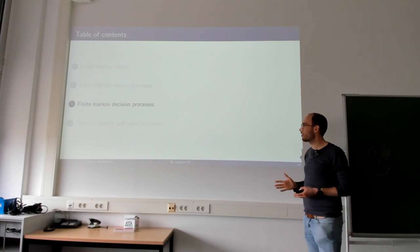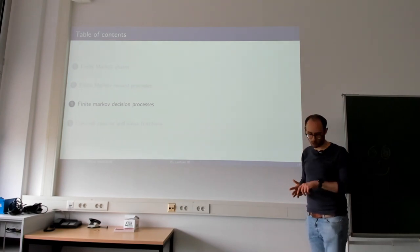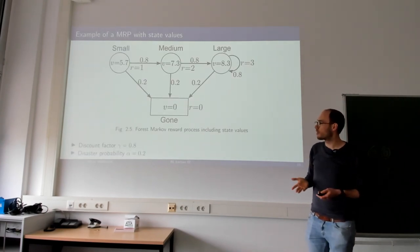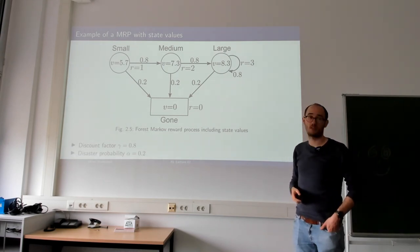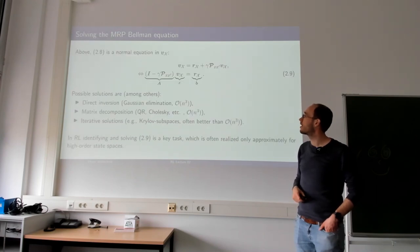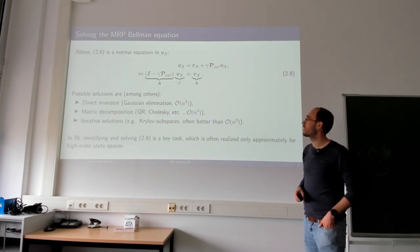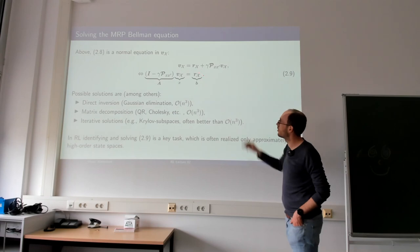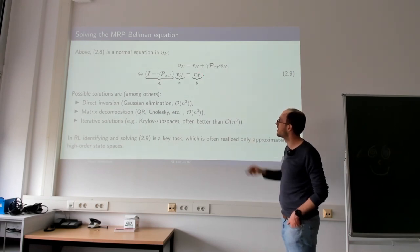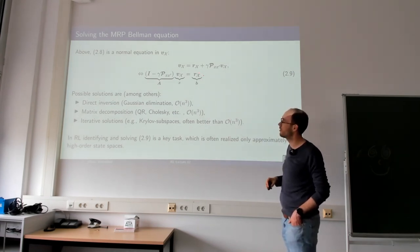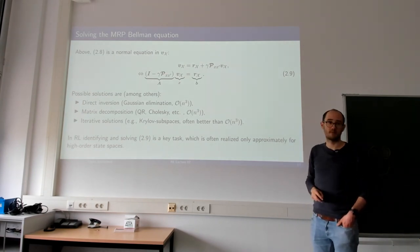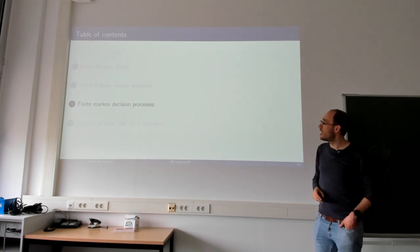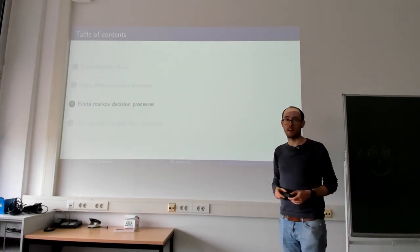That covers everything needed for reward processes. Reward processes indicate how much we like certain states, and through the Bellman equation in vectorial form, we can calculate unknown state values in closed form given knowledge of the model by solving this normal equation.